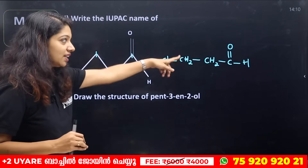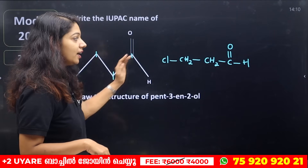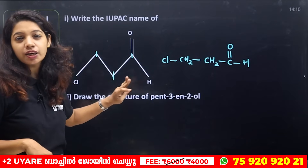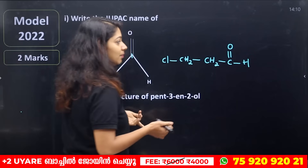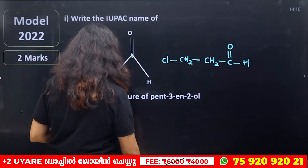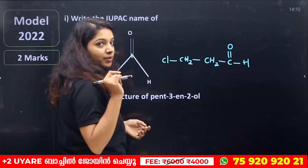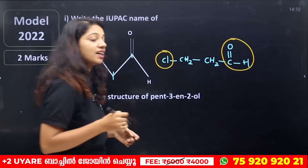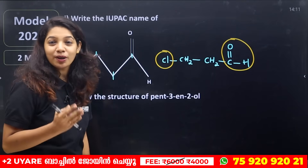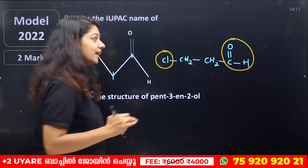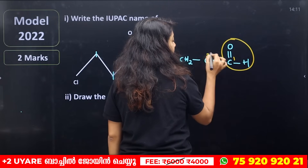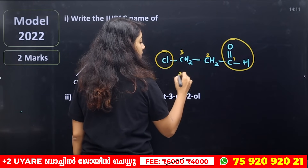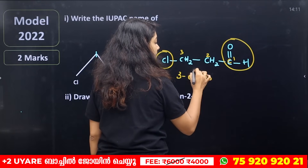We can control this idea. What we do? We have to control this formula. We will represent the formula in condensed method or complete method. In this case, you have to take the rules. There are two functional groups that are not priority: chlorine, C double bond H, aldehyde. Carbon is the number, chlorine is the number. In the third carbon, chlorine is 3-chloro.